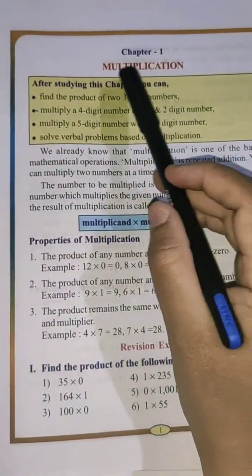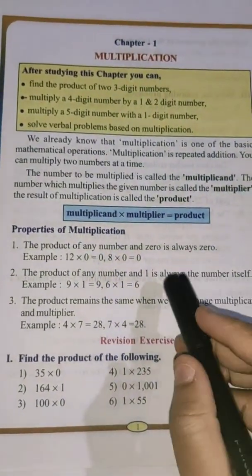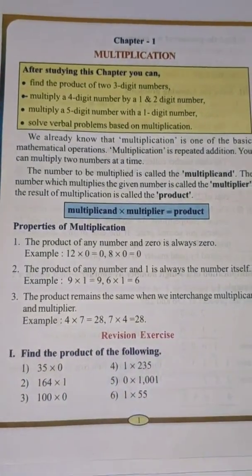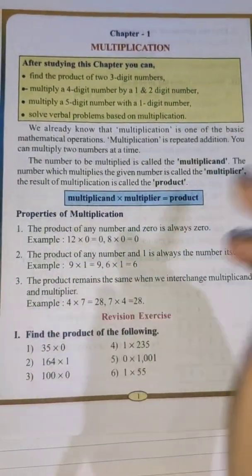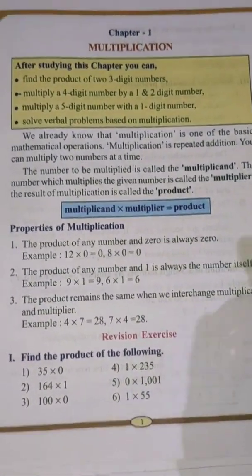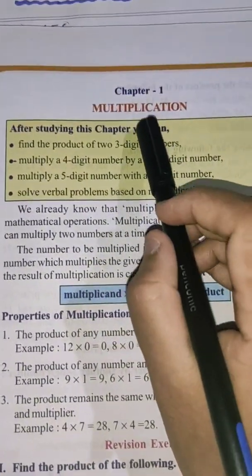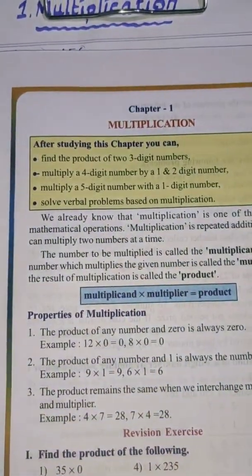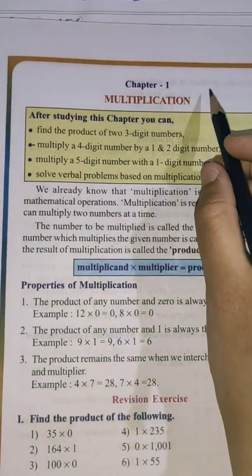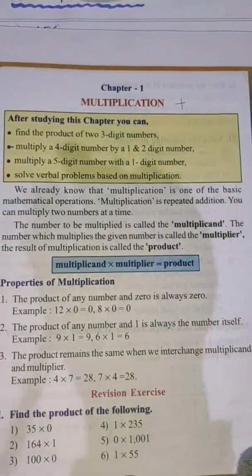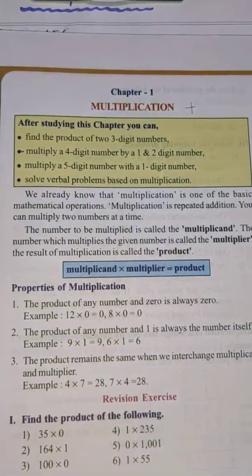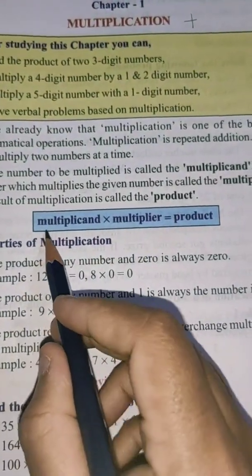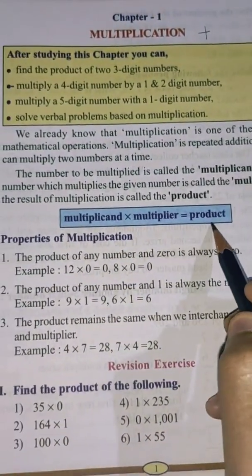The first chapter is multiplication. Children, you have already learnt the multiplication lesson in 4th standard, right? So let's revise it a little bit. Multiplication is the basic mathematical operation, and multiplication is the repeated addition. The multiplicand into multiplier is equal to product.